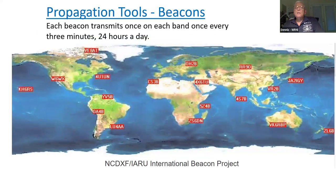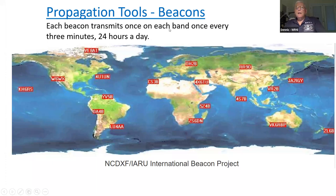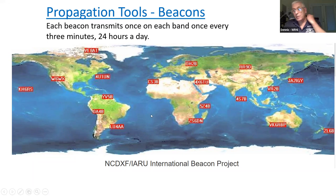You can also listen for beacons to test your antennas. These beacons are set up all over the world — one in Hawaii, one in Japan, another in New Zealand. They transmit once on each band every three minutes, 24 hours a day. You can listen for these beacons to check for band openings, or if you have two antennas — a vertical and a wire antenna — to see which one you can hear best. Beacons are good propagation tools, and this is on the NCDXF International Beacon Project. I'll send a link in the presentation.